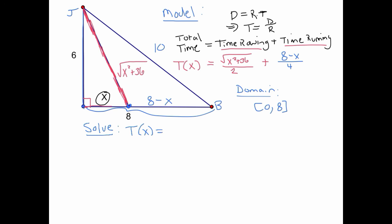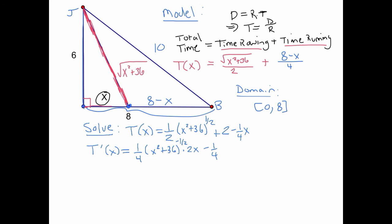Let's solve by taking the derivative. I'll rewrite the function as T(x) = (1/2)(x² + 36)^(1/2) + (8 − x)/4, writing the second part as 2 − (1/4)x for easier differentiation. Then T′(x) = (1/2)·(1/2)(x² + 36)^(−1/2)·(2x) minus 1/4. That's using the chain rule: the derivative of the inside is 2x, and the derivative of the linear term is just −1/4.